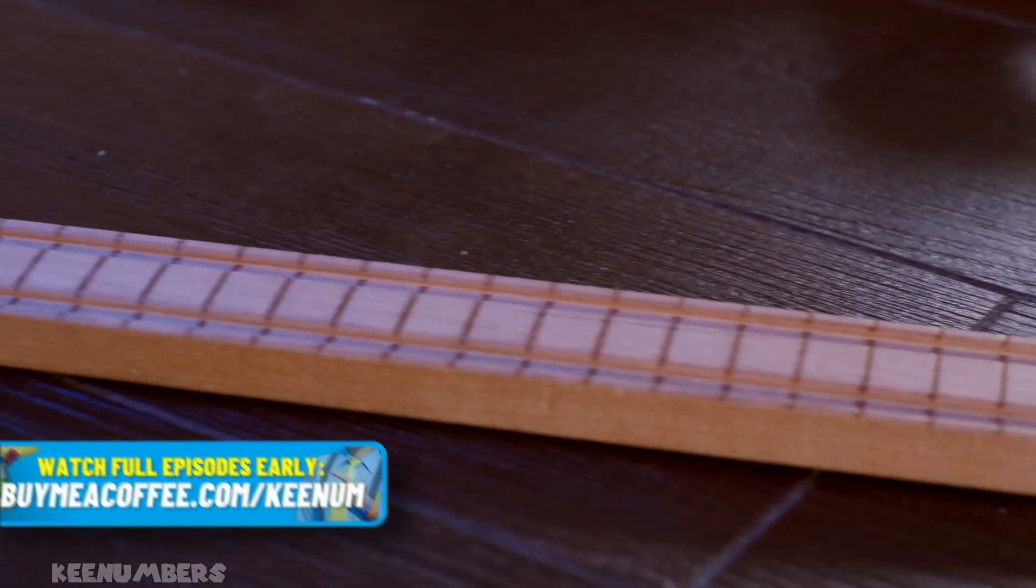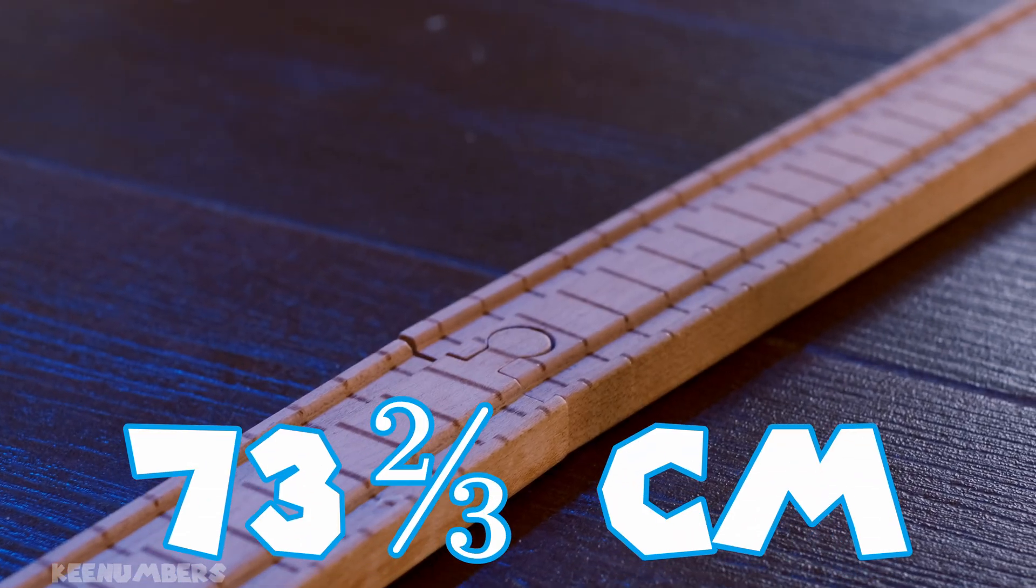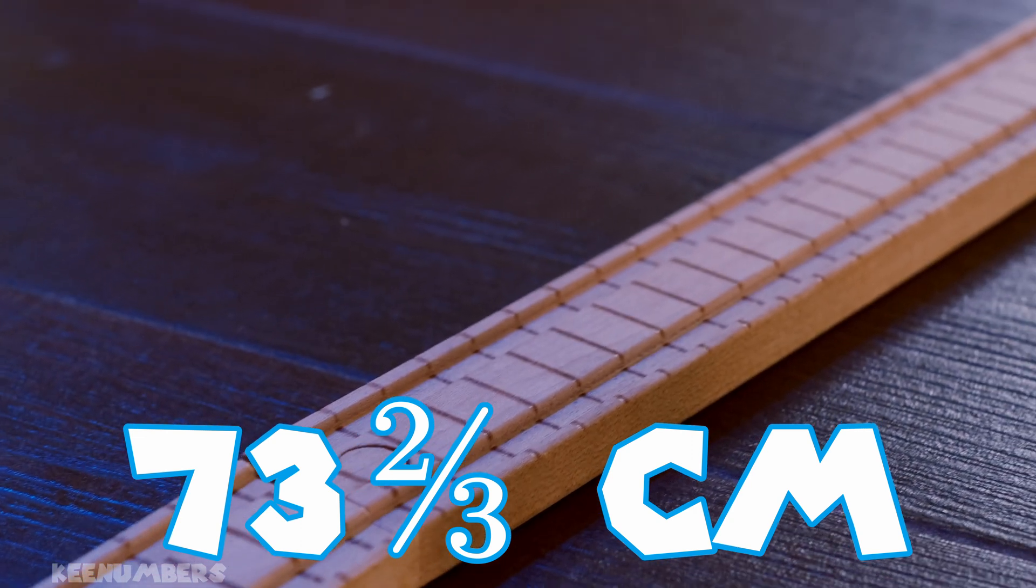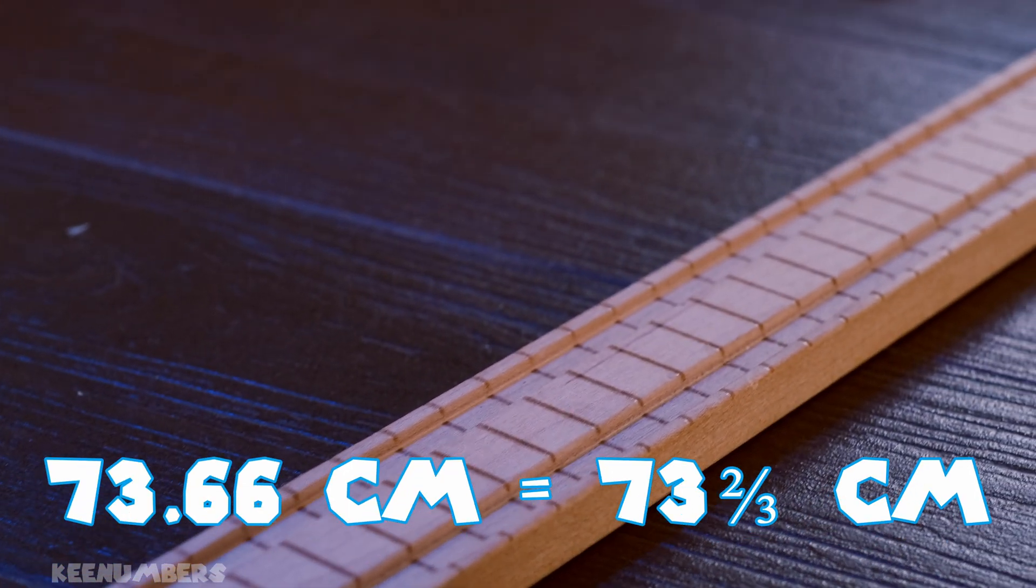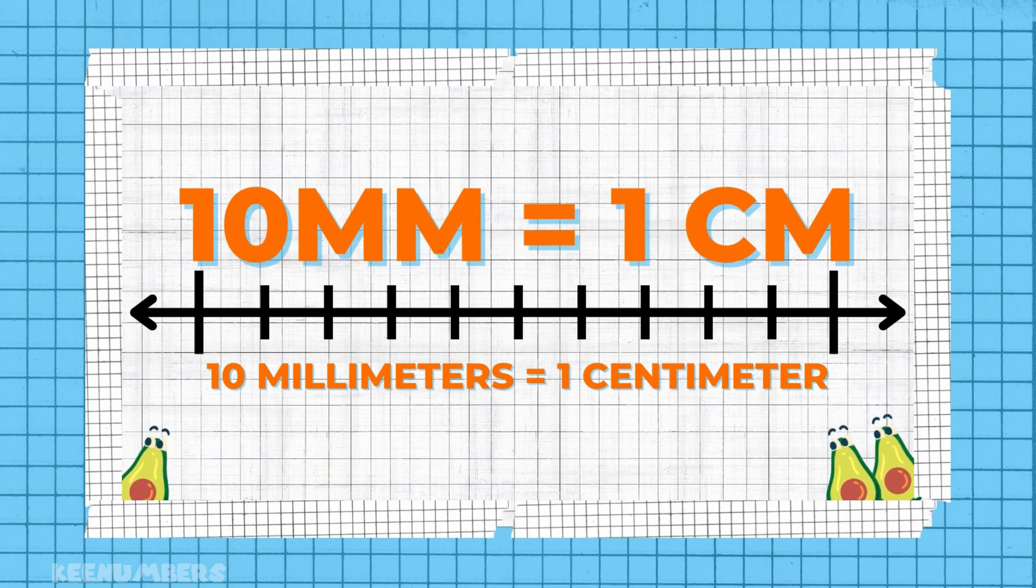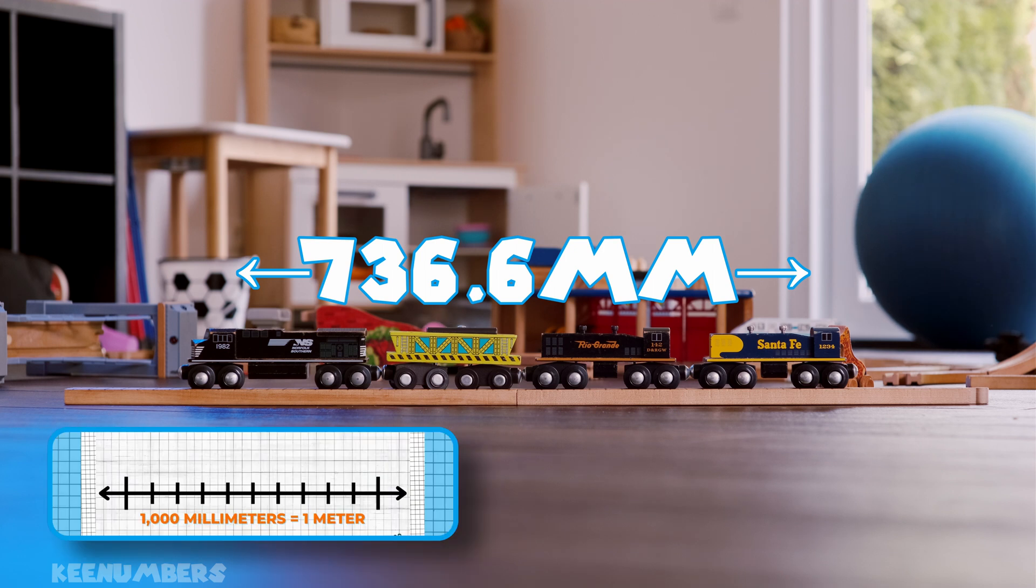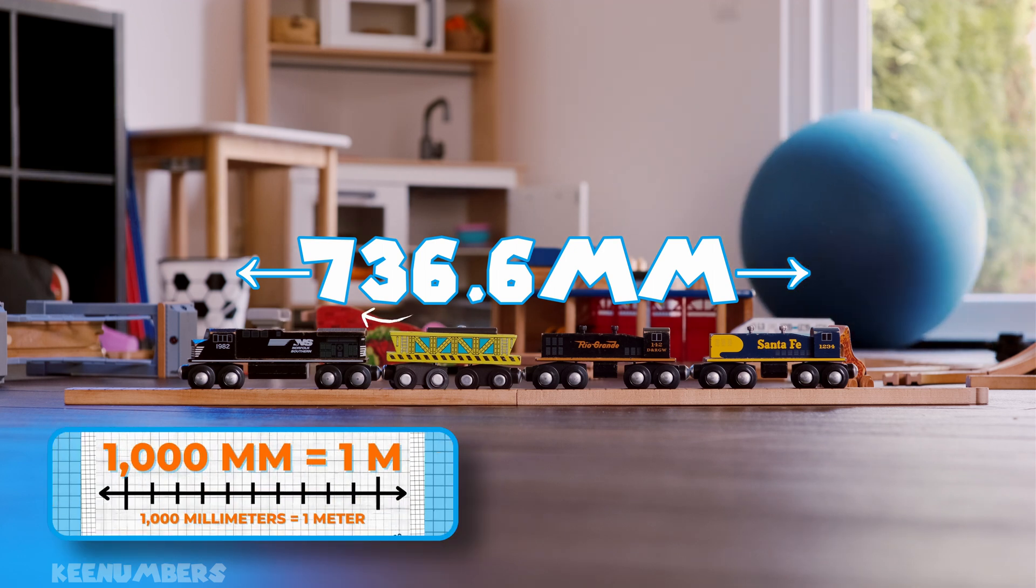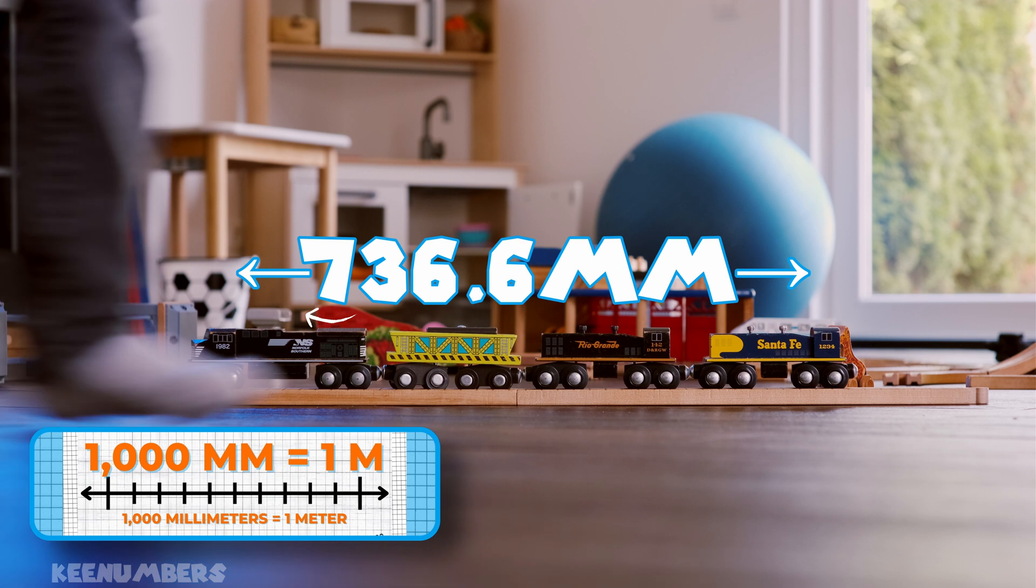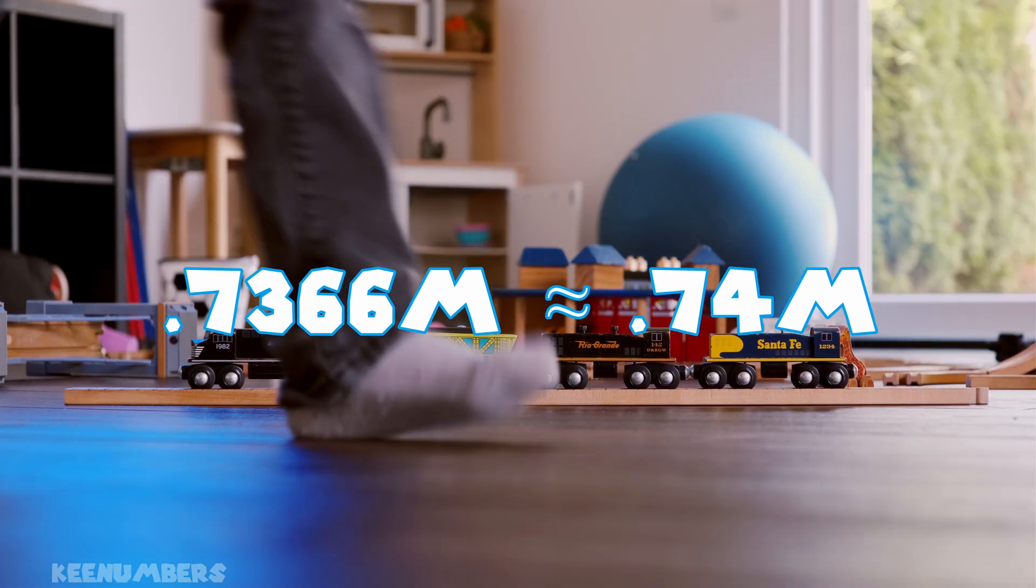This track is 73.66 centimeters. That's seventy-three and two-thirds of a centimeter approximately. There are ten millimeters in every centimeter, so that means there are about 736.6 millimeters. There are a thousand millimeters in one meter, so this is about 0.7366 meters. You could round up and say it's about 0.74.